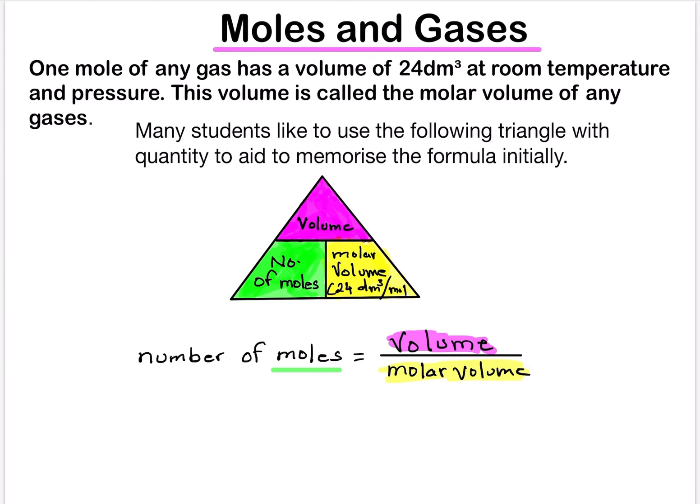So this hypothesis remains true as long as we have the same room temperature and pressure. So whenever we are solving numericals it's important to mention our room temperature and pressure. That means one mole of any gas has a volume of 24 dm³, so that is very important to mention.